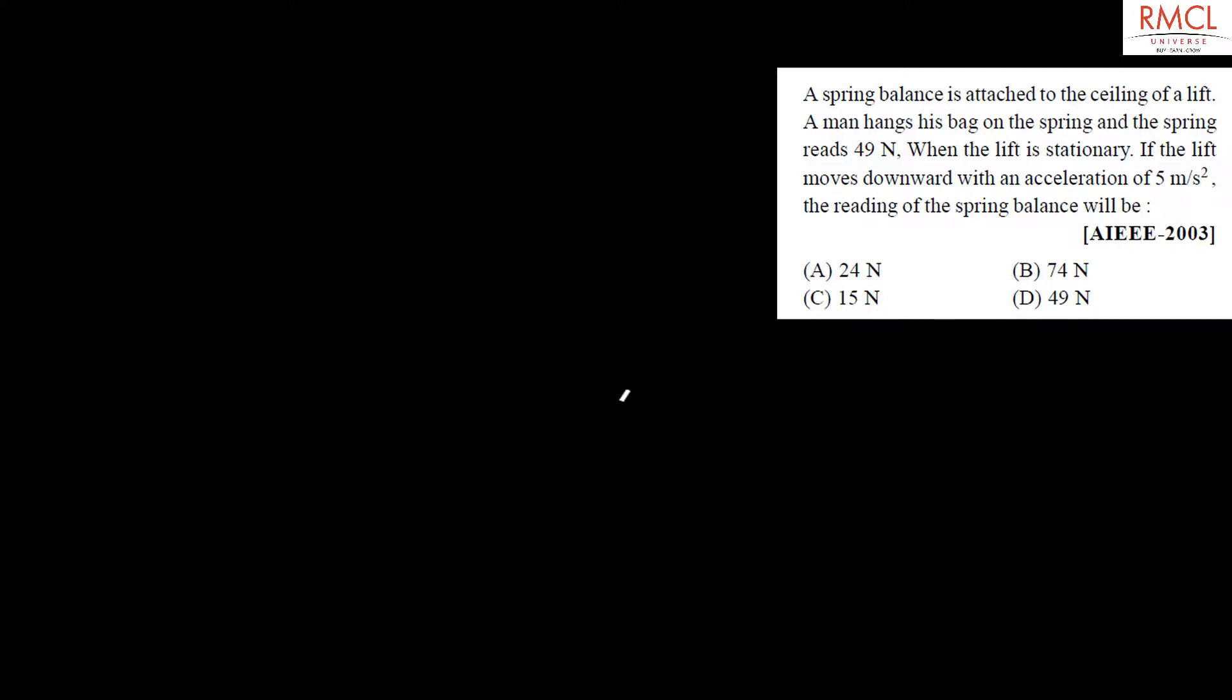A man hangs his bag on the spring and the spring reads 49 newton when the lift is stationary. If the lift moves downward with an acceleration of 5 meter per second square, the reading of the spring balance would be? There would be a spring balance, and on putting some mass over here, the value of spring balance is 49 newton.